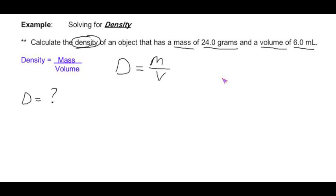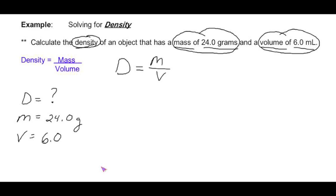The mass of 24.0 grams is given to you. Mass of this object is 24.0 grams. And the volume is also given to you where they say volume of 6.0 milliliters. Volume equals 6.0 milliliters.